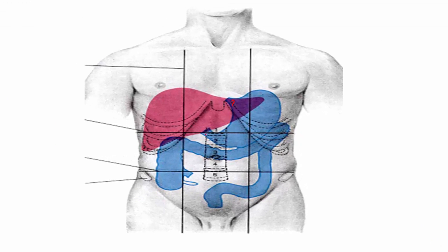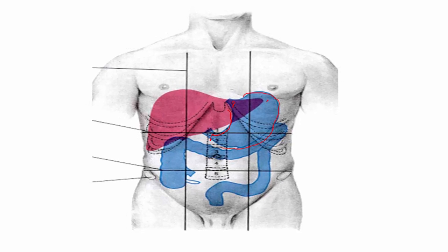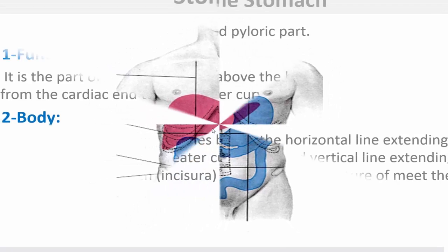This is the surface anatomy of the stomach: the cardiac end, the pyloric end, the greater curvature, the fundus, and the lesser curvature.